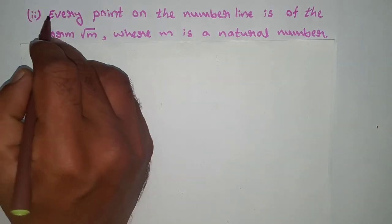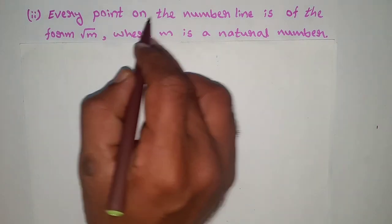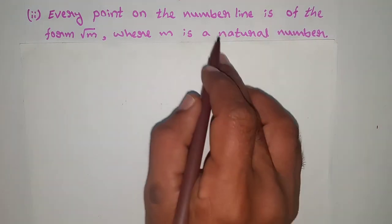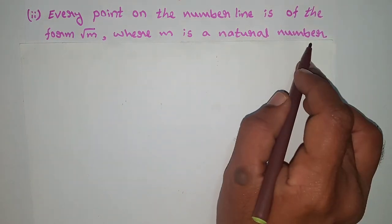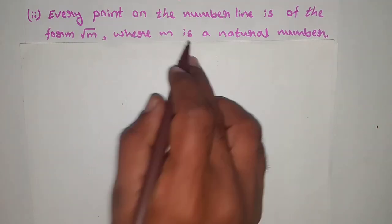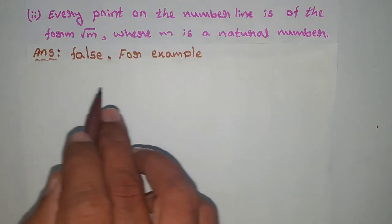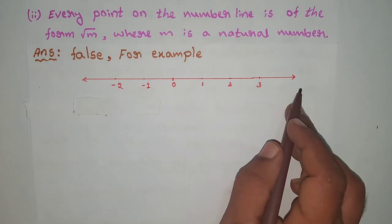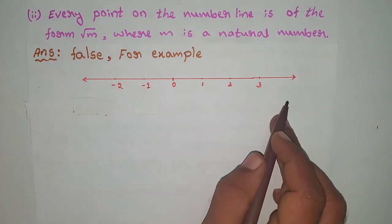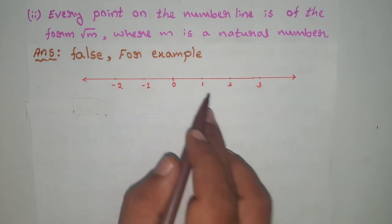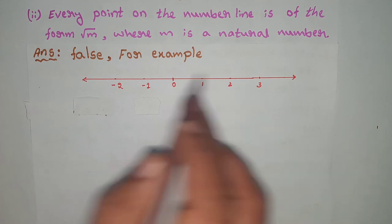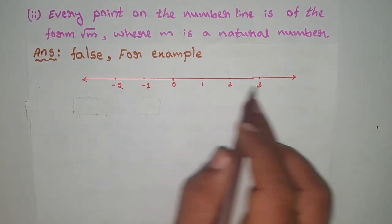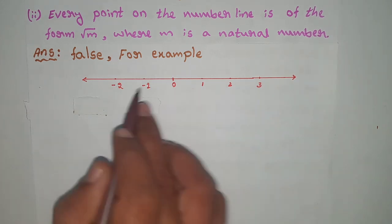Second statement: every point on the number line is of the form root M, where M is a natural number. This statement is false. For example, we can represent positive numbers as well as negative numbers on a number line — both positive and negative numbers.